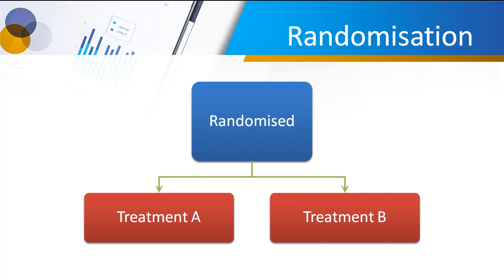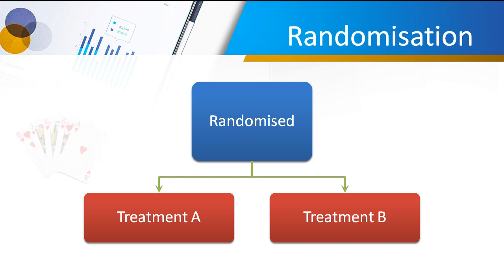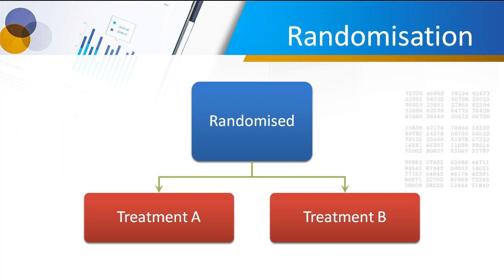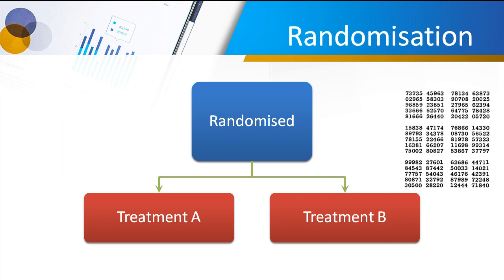So what we do to get around this is we randomise our patients into various groups — into treatment A and treatment B. We might do this by tossing a coin, or picking a card out of a deck, or more likely these days we have some kind of random number generator to make this decision for us. And randomisation gets rid of a lot of problems that we might have compared with the straight comparison method.